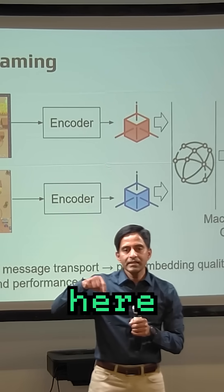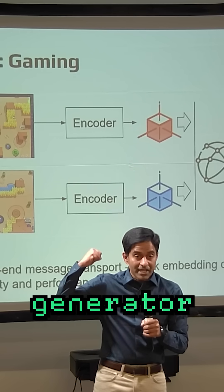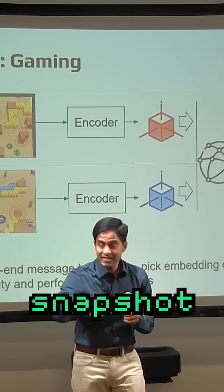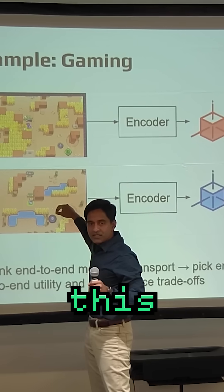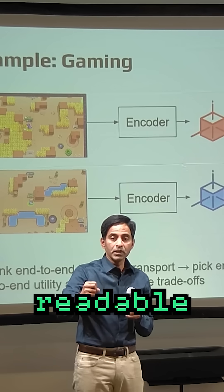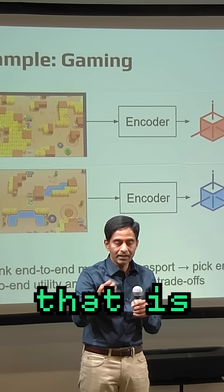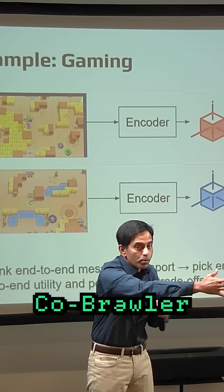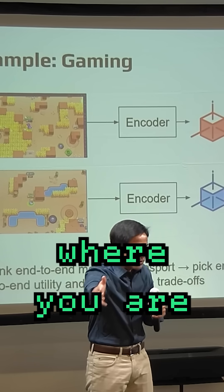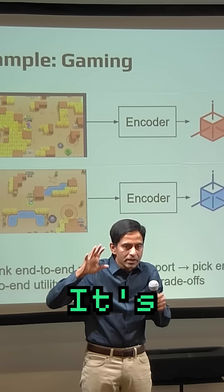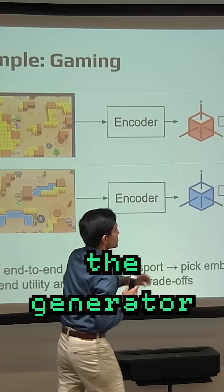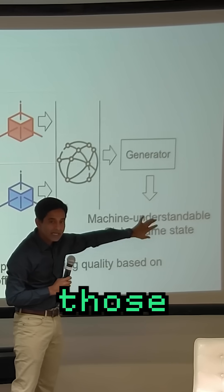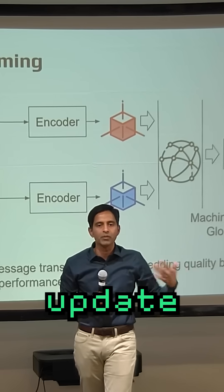The interesting thing here is that the generator doesn't need to generate your snapshot and your friend's snapshot. It doesn't actually need to generate this. It only needs a machine-readable output that is very Brawl Stars specific. You need to know where your other co-brawler or whatever you call it is, and he needs to know where you are and what your health is and so on — it's very context-dependent. So the generator can actually just generate machine-understandable state and send those embeddings back, which can then be used to update your state.